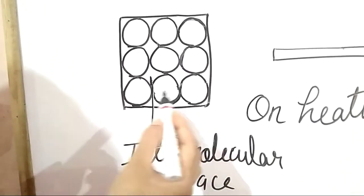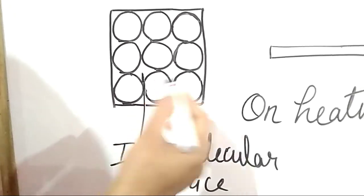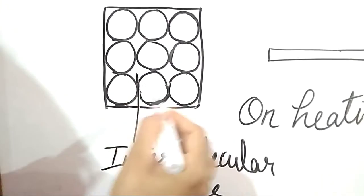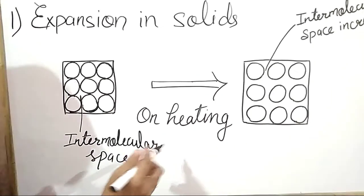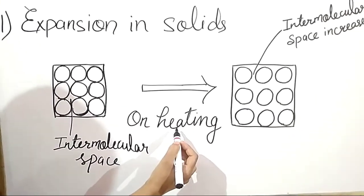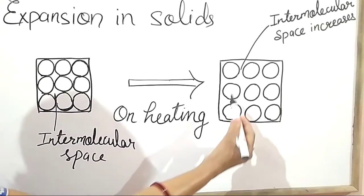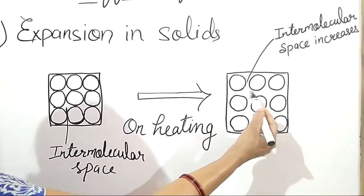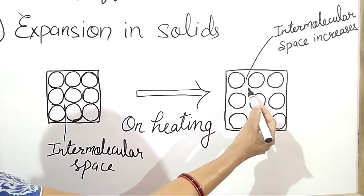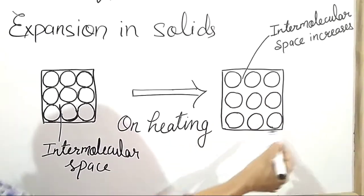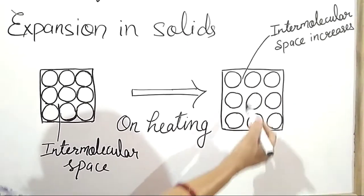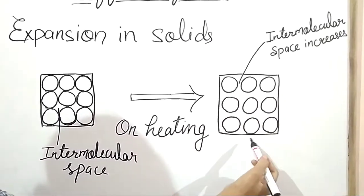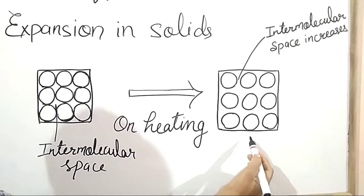So you can see they cannot move apart from each other — they vibrate on their place. On heating, the vibrations of these molecules increase, which means the space between these molecules also increases. So they occupy more space. That's why the volume of solids increases, and we can say that on heating, solids expand.